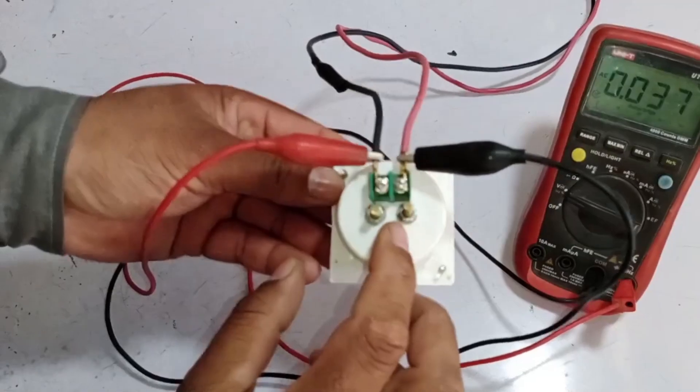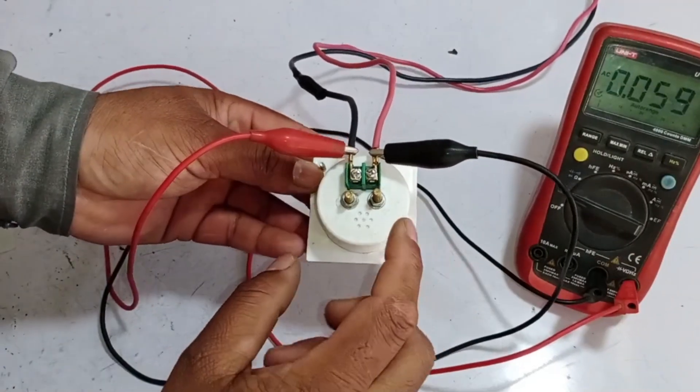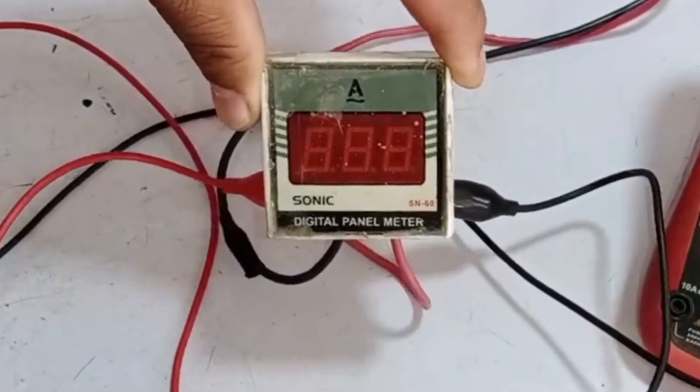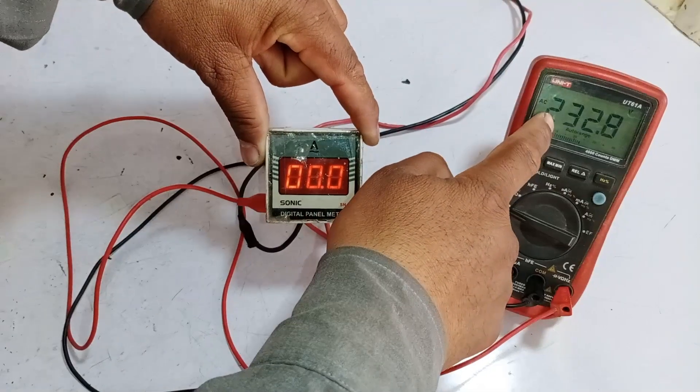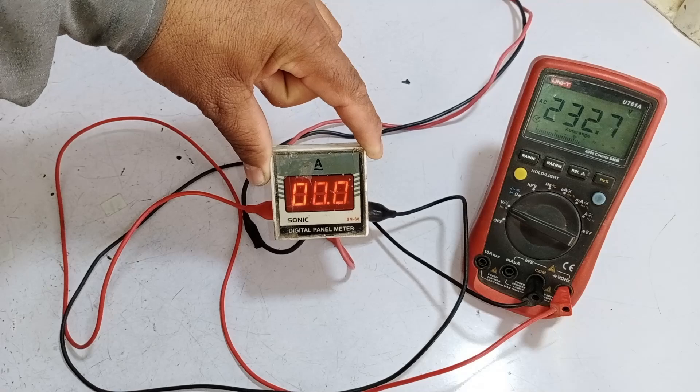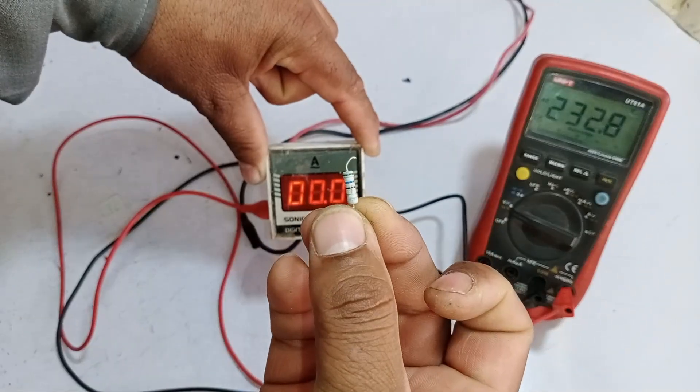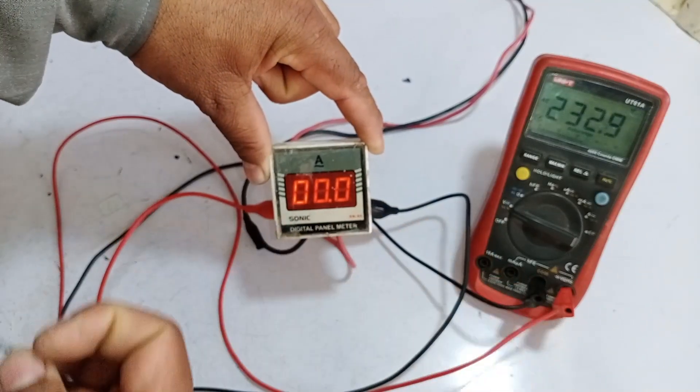Now, I have fixed the ammeter and reconnected the line and neutral wires. Let's test it now. We have supplied electricity, and as you can see, the ammeter has started working, showing 232 volts as well, so by simply replacing one resistor, we were able to repair the ammeter and make it functional again.